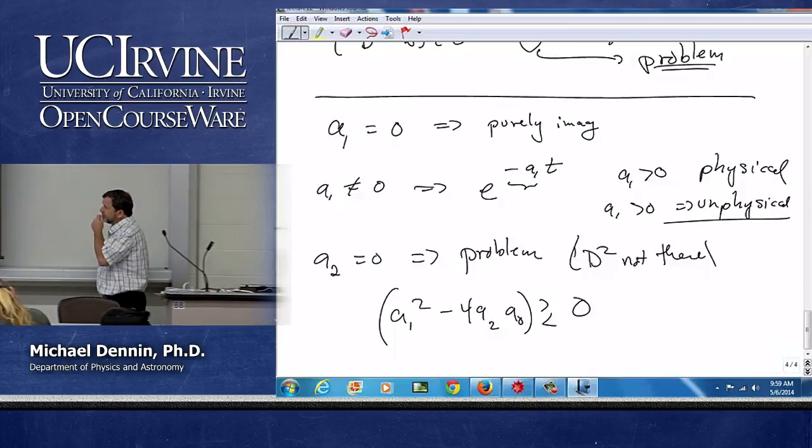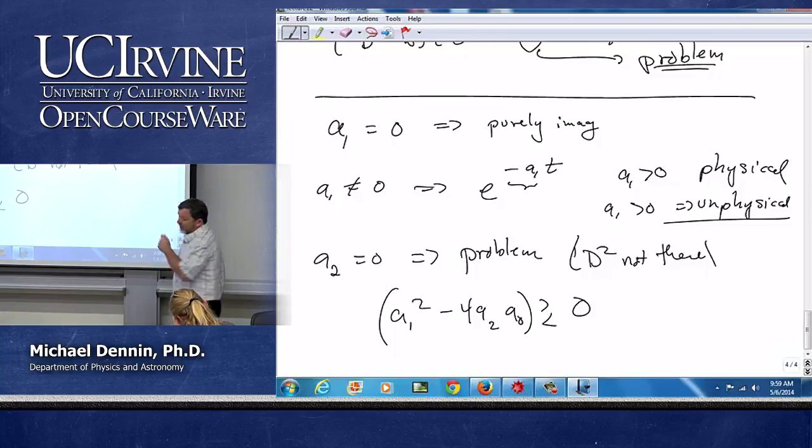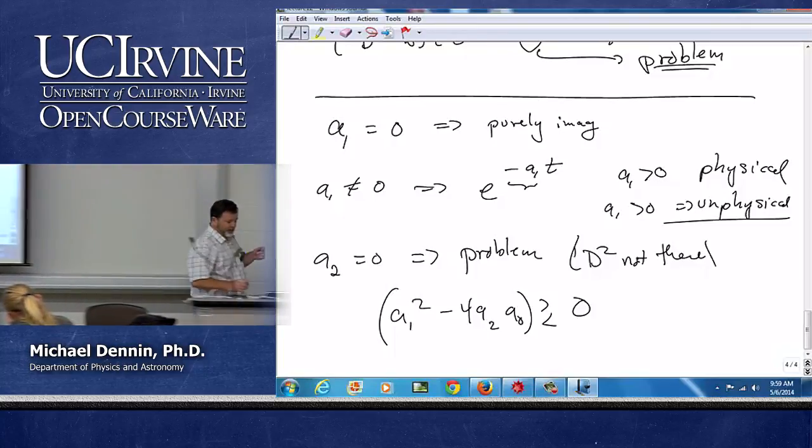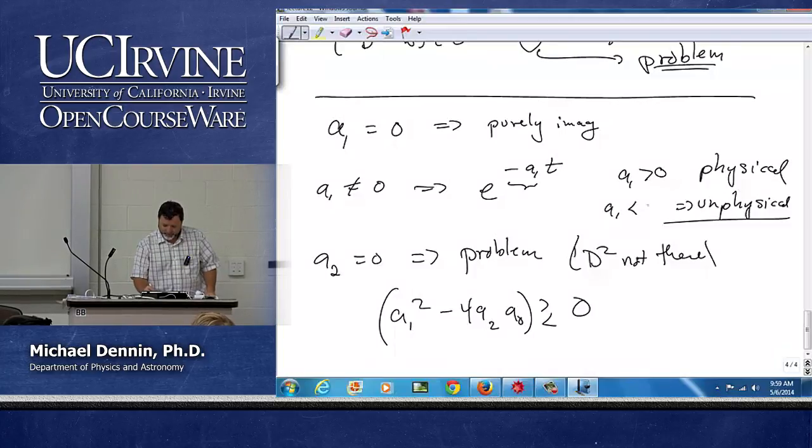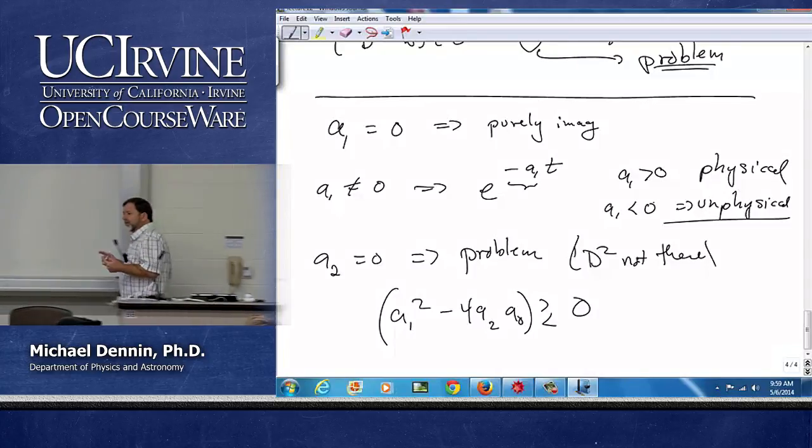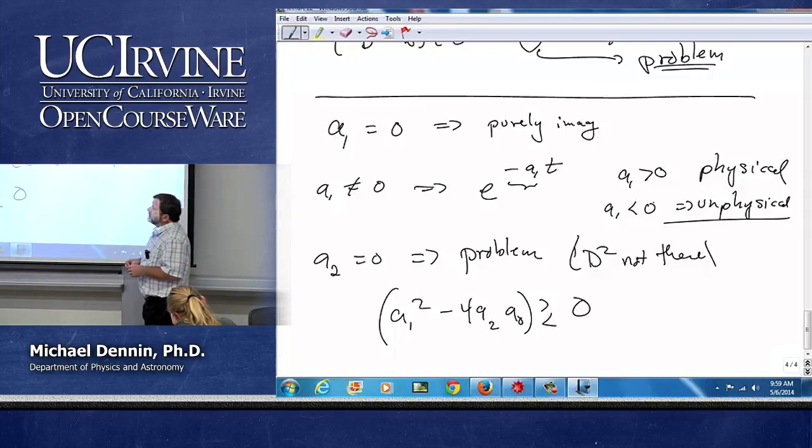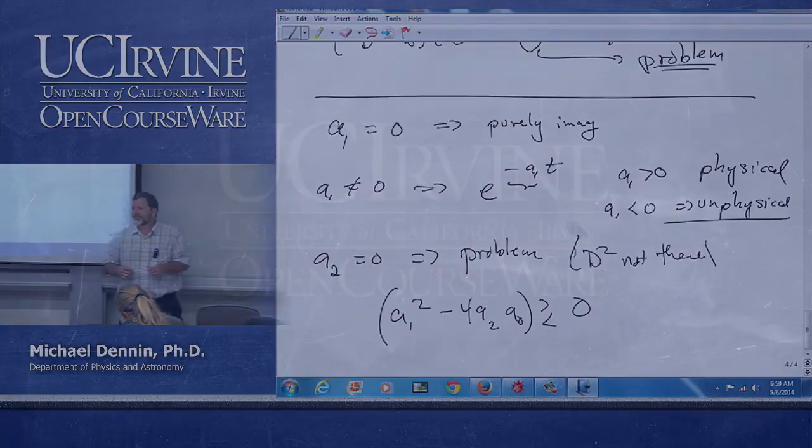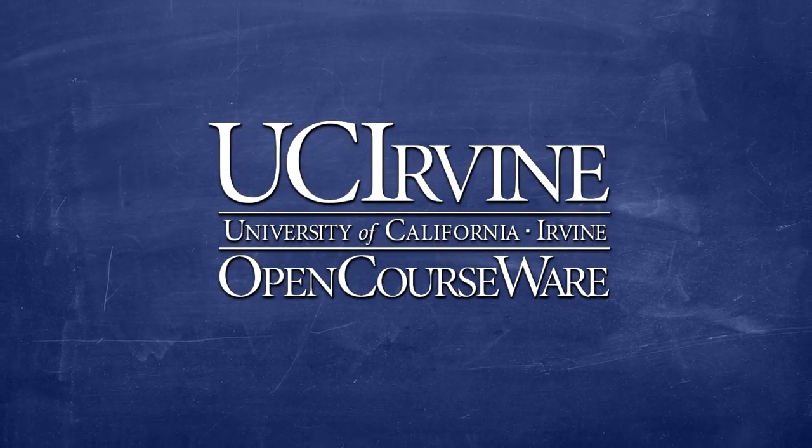Any questions on that? Yes? The a1 are both greater than zero for physical and unphysical? Oh, sorry. That's supposed to be a less than zero. Thank you. Because notice, if a1 is negative, the e to the minus minus makes it positive. Yeah. Good catch. Good catch.